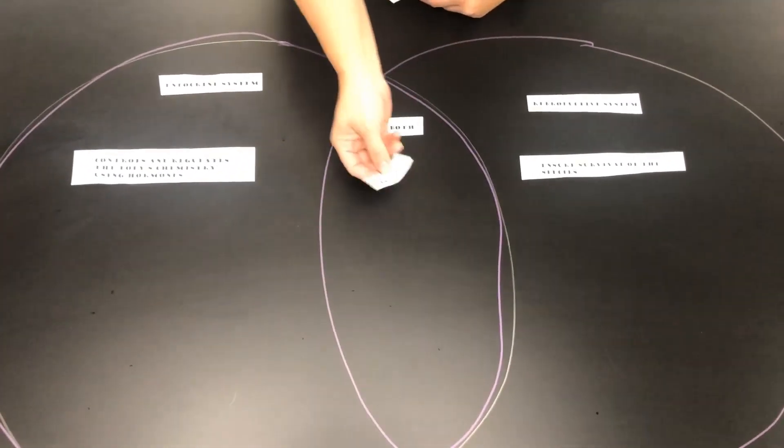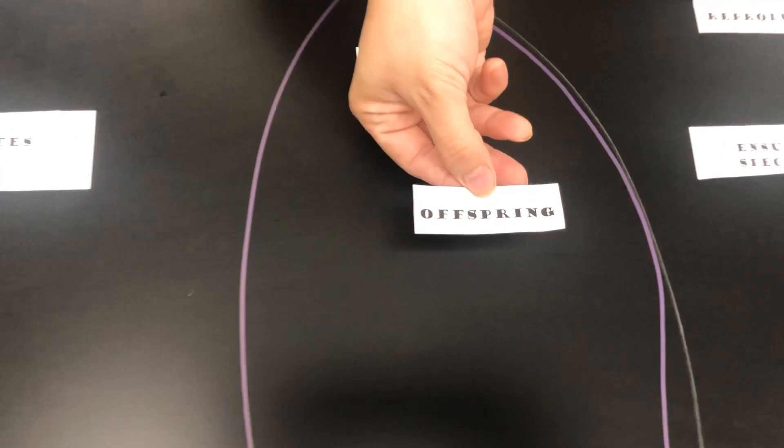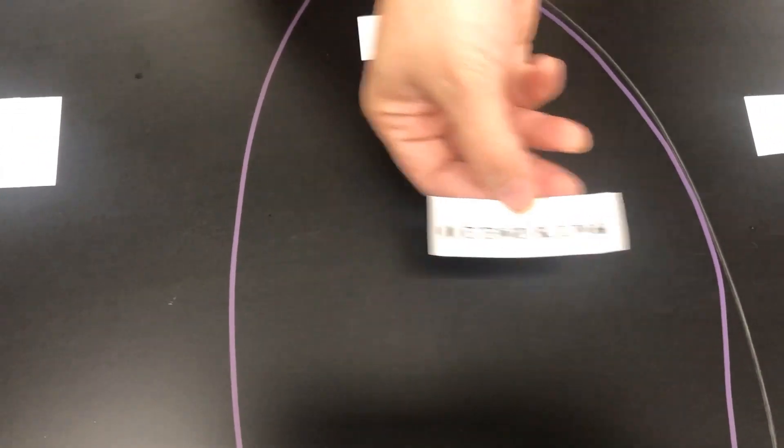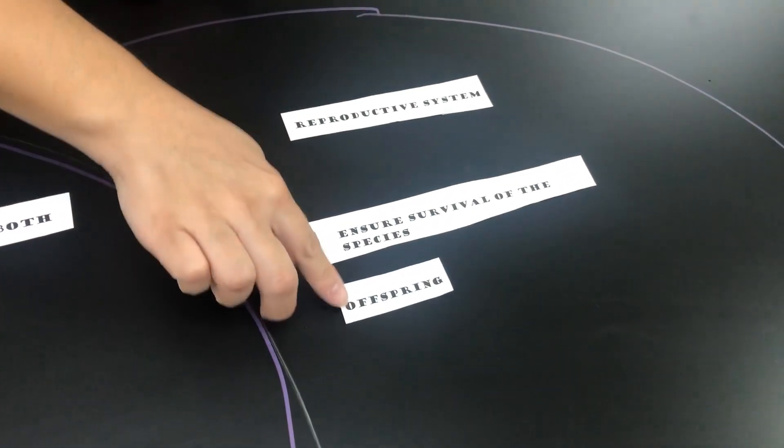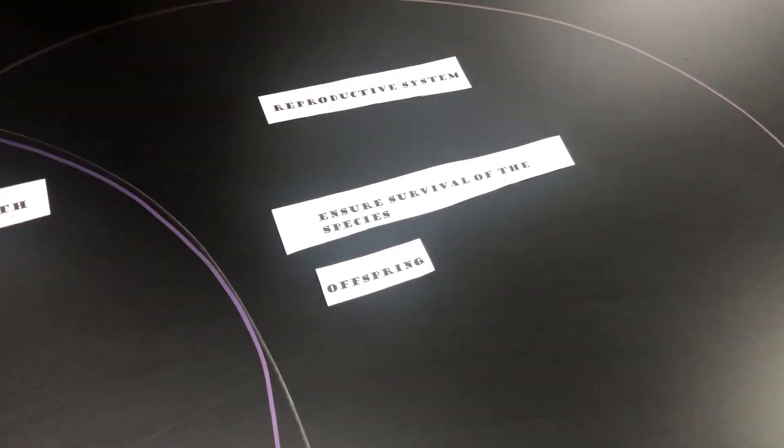The word offspring - remember when we covered that, that was in the reproductive system. So offspring are like babies.